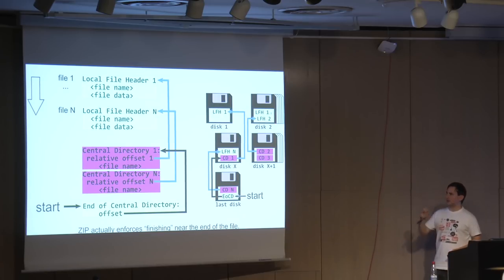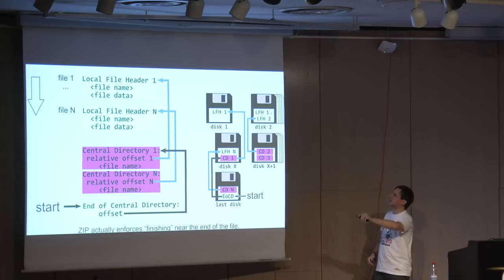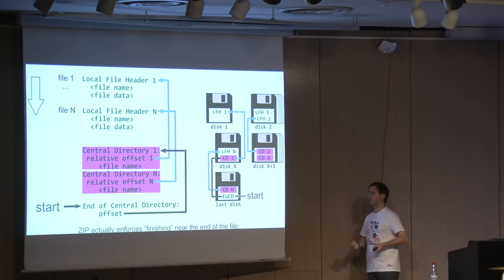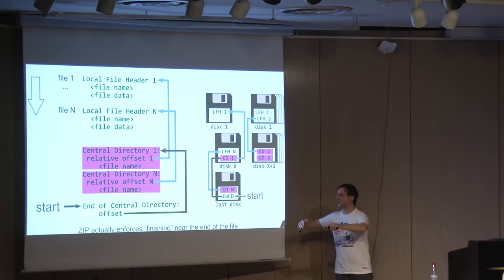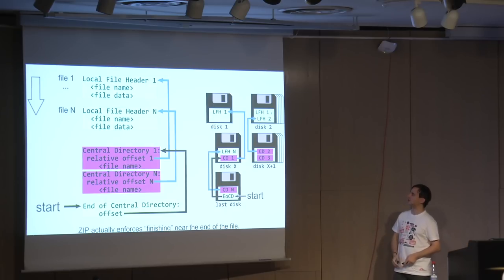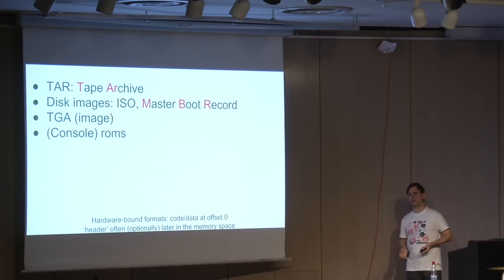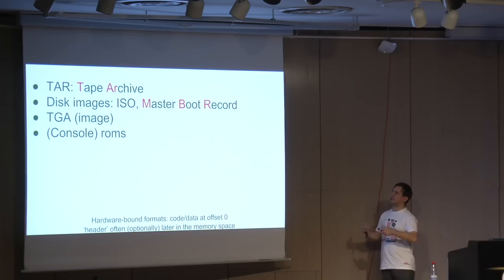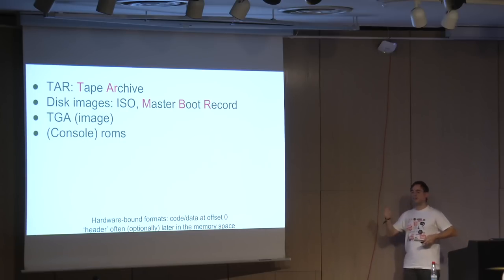An important point for ZIP is that it doesn't enforce a signature at any particular place — ZIPs are written backward from the end. This is for old-school reasons: when writing a ZIP file on the fly onto multiple floppies, it writes the last information on the last disk, minimizing floppy swaps. So ZIP enforces that the first structure to be checked is near the end of the file. Some formats like TAR, ISO, MBR, and even TGA start directly with data and optionally have a header later in the memory space — they have an excuse for not having a magic at offset zero because they are bound to hardware.